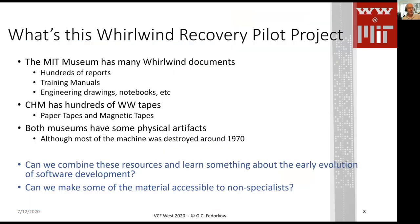So what's this Whirlwind Recovery pilot project? The MIT Museum has many Whirlwind documents — hundreds of reports, training manuals, engineering drawings, notebooks. At the same time, CHM has in its archive hundreds of paper tapes and about a hundred magnetic tapes. Both museums have some physical artifacts, although the bulk of the machine was destroyed around 1970. The question, of course, was could we combine all of these resources and learn something about the early evolution of software development? And in the process, can we somehow make the material accessible to non-specialists who don't want to wade through 2,000 documents of scanned Whirlwind reports?